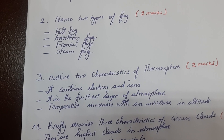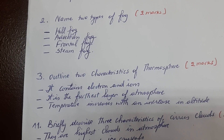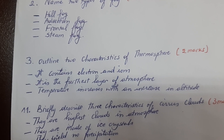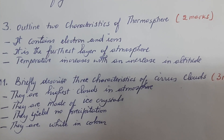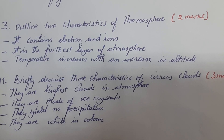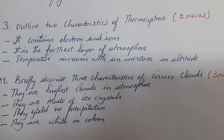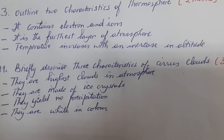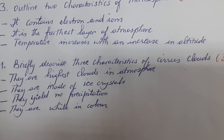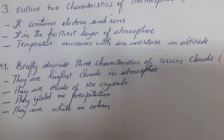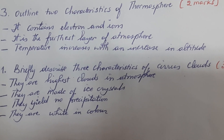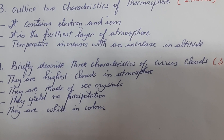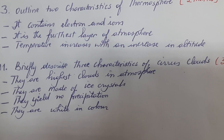Question number three asks: outline two characteristics of the thermosphere. This question was worth two marks. Point one: it contains electrons and ions. Point two: it is the furthest layer of the atmosphere. Point three: temperature increases with an increase in altitude, meaning that in the thermosphere, temperature rises as altitude also rises.